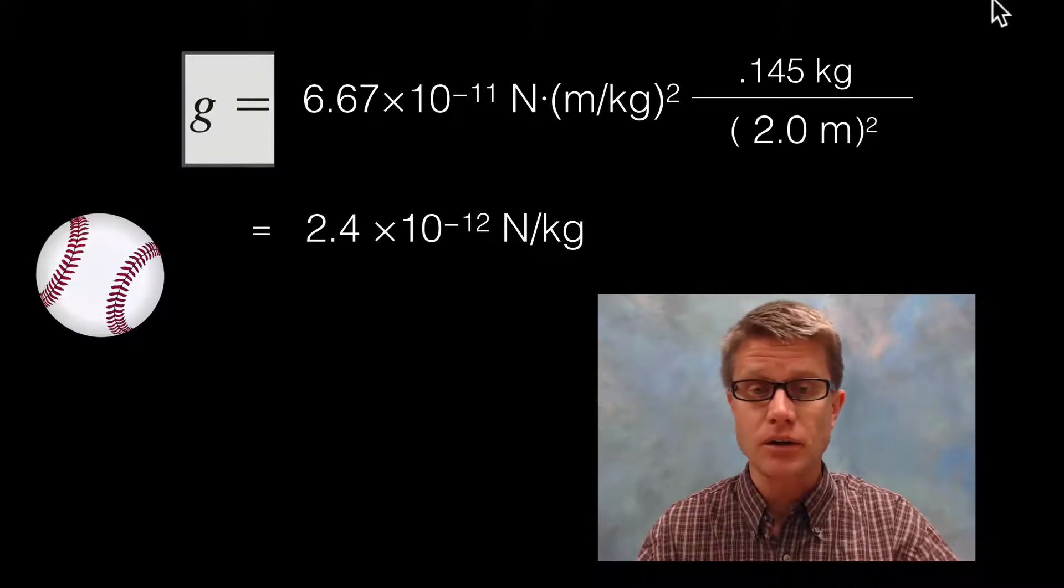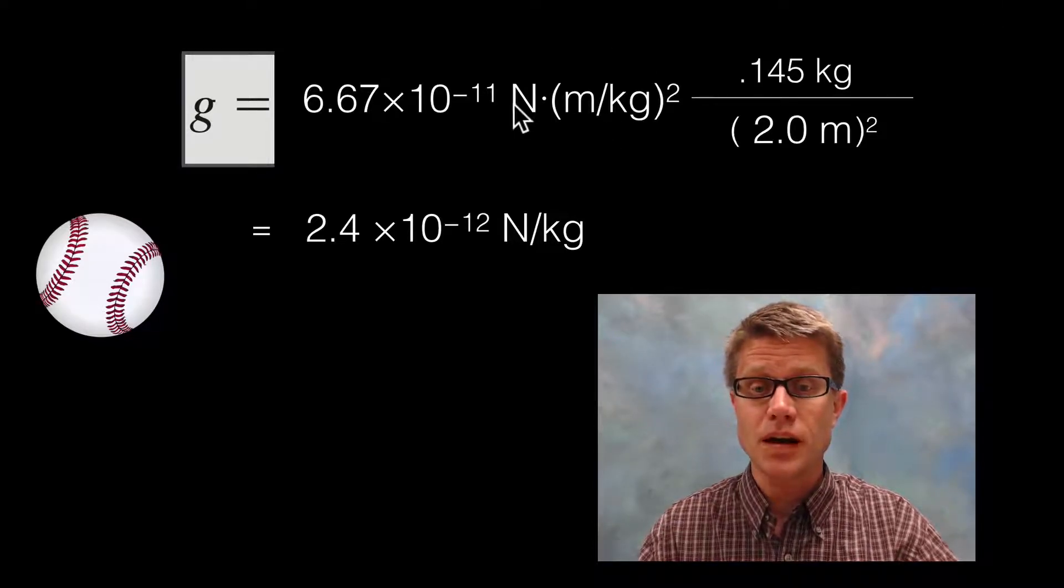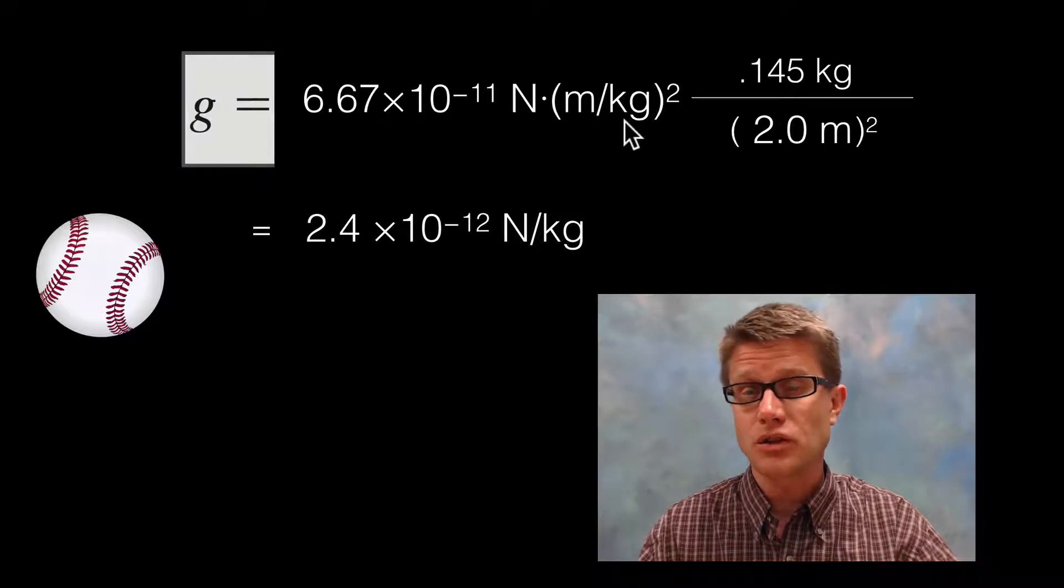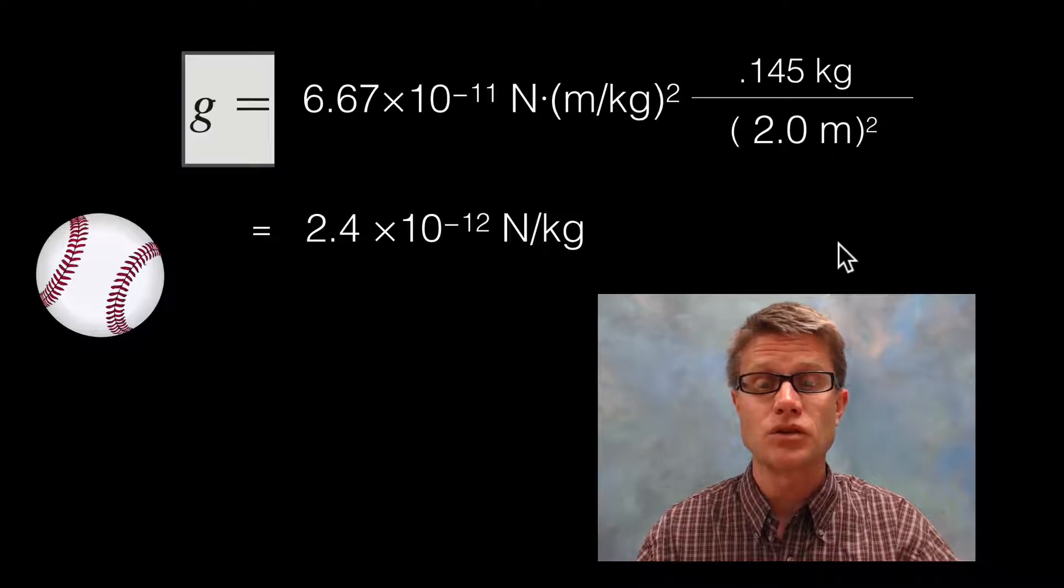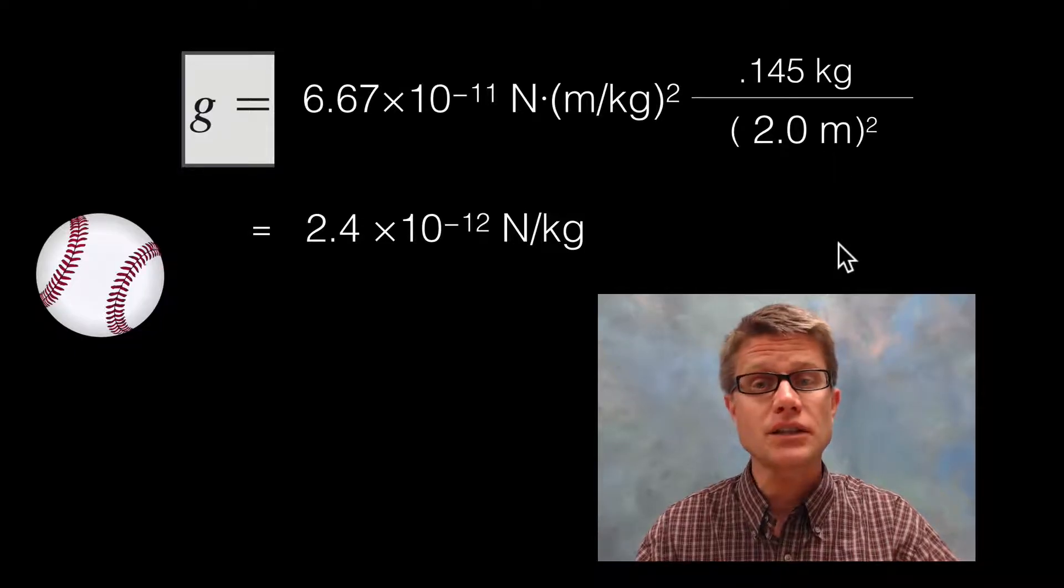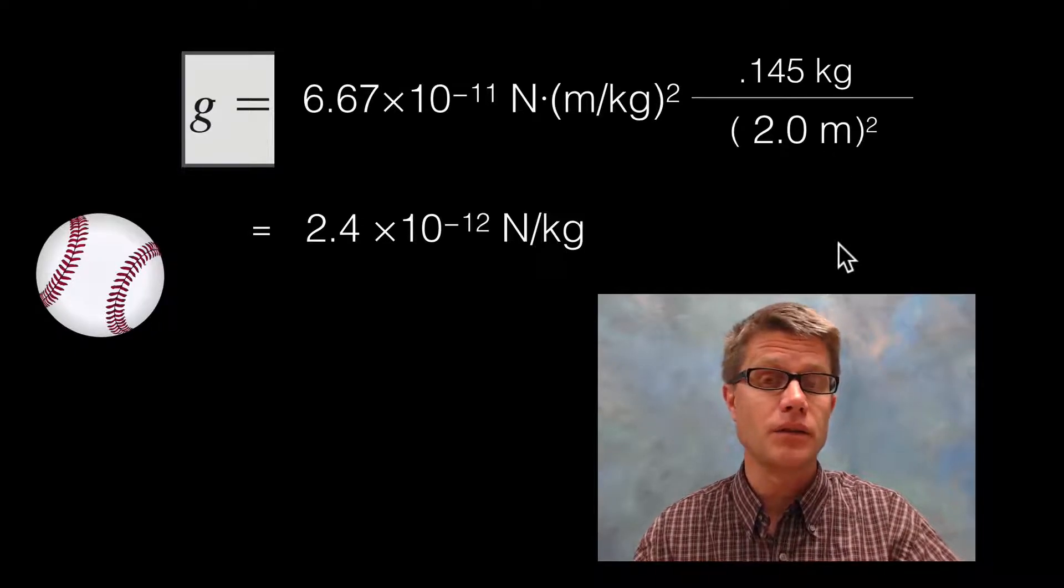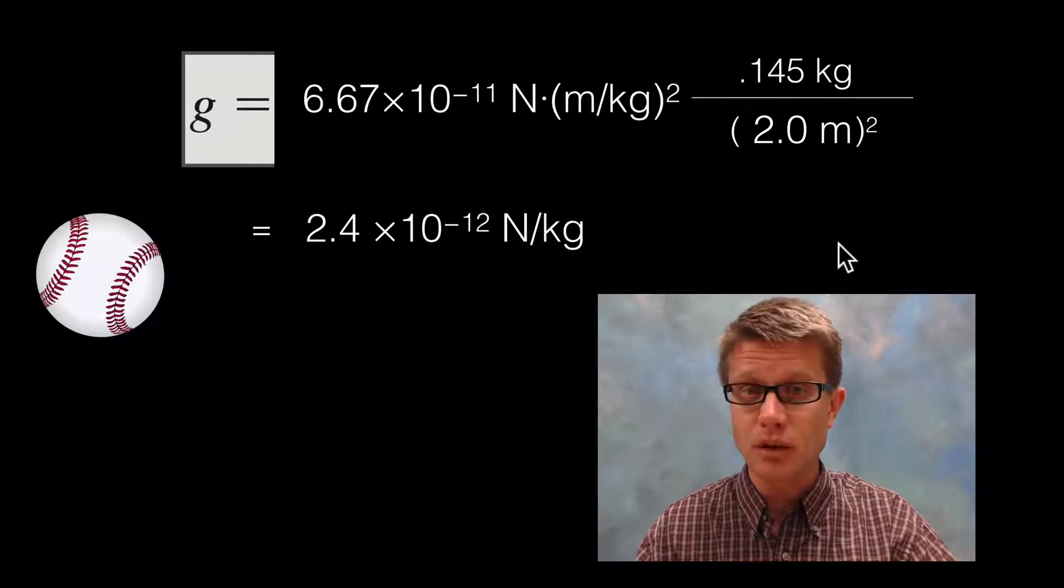If we cancel out all those units, we've got newtons on the top. We've got kilograms on the top. But we've got kilograms squared on the bottom. So we're going to end up with 1 kilogram on the top. And then the meters squared are going to cancel out. That's going to be the gravitational field strength of the baseball. Incredibly small. But it's still there.